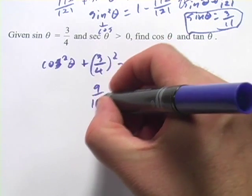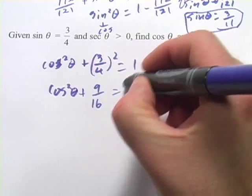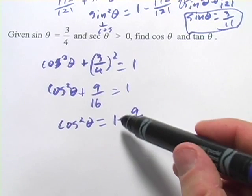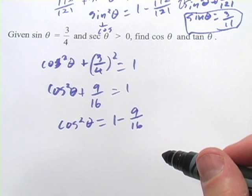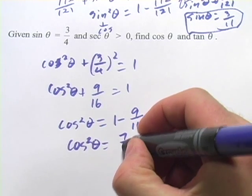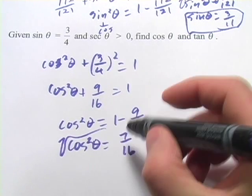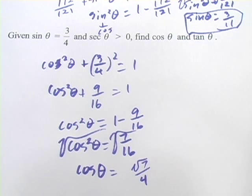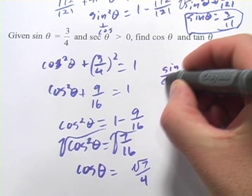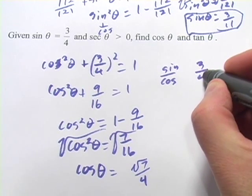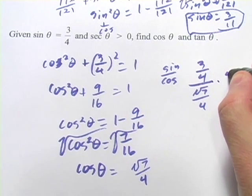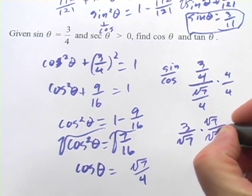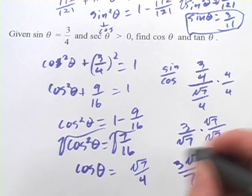3 fourths squared is 9 sixteenths. Subtracting 9 sixteenths from both sides, cosine squared of theta equals 1 minus 9 sixteenths, which is 16 sixteenths minus 9 sixteenths, giving us 7 sixteenths. Taking the square root of both sides, cosine of theta equals square root of 7 over 4. To find the tangent, we put sine over cosine: 3 fourths divided by square root of 7 over 4. Multiplying by 4 over 4 gives 3 over square root of 7, then rationalizing gives 3 times the square root of 7 over 7.